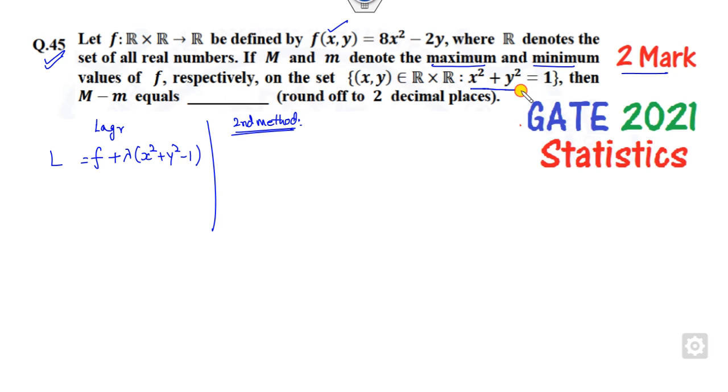You can see this equation is nothing but the equation of a circle. Since it is equality, it means you are considering only points on the circle. Any equation you can convert into polar form. What is that? x is nothing but r cos θ and y is r sin θ, where r is the radius of the circle and it is given as one. Therefore, x is cos θ and y is sin θ. You can substitute this in the given equation.